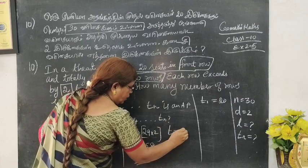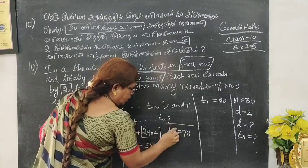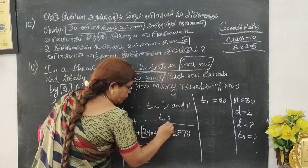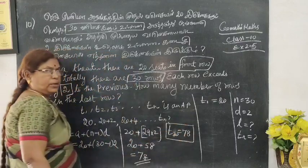So there are 78 seats in the last row. Last row is 78 seats.